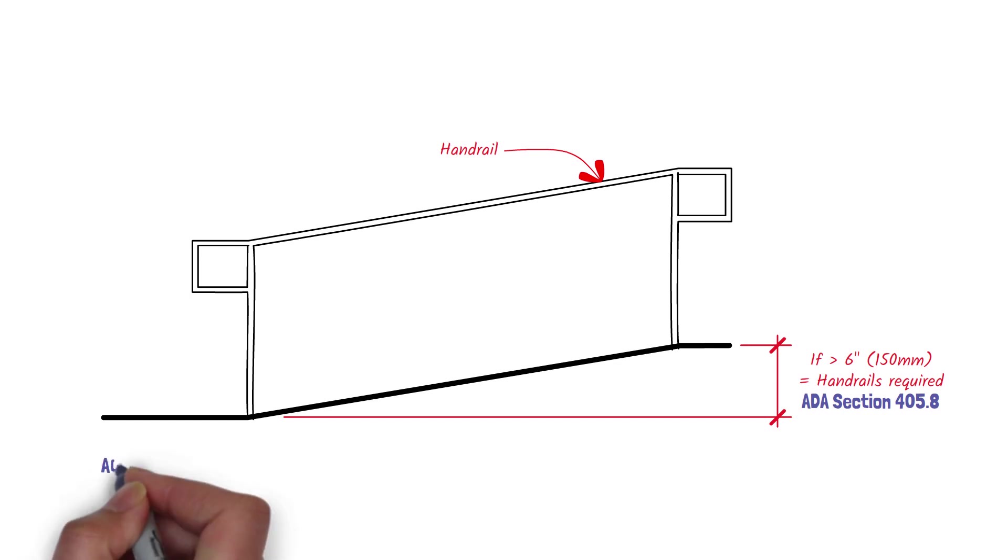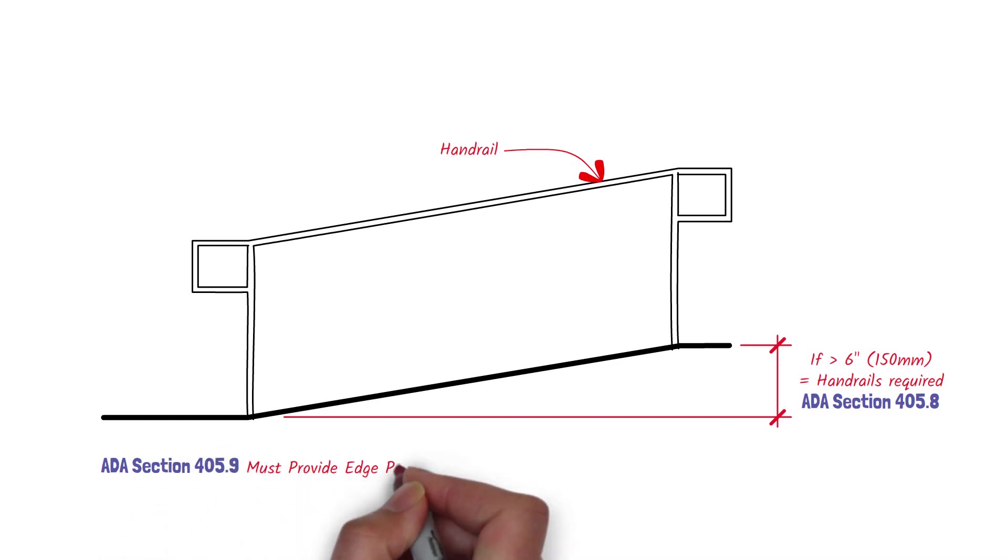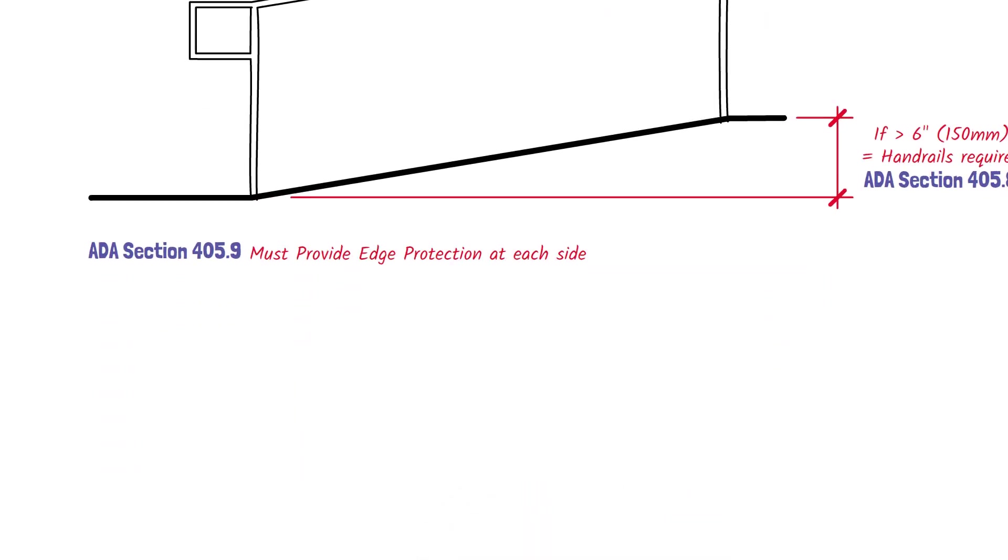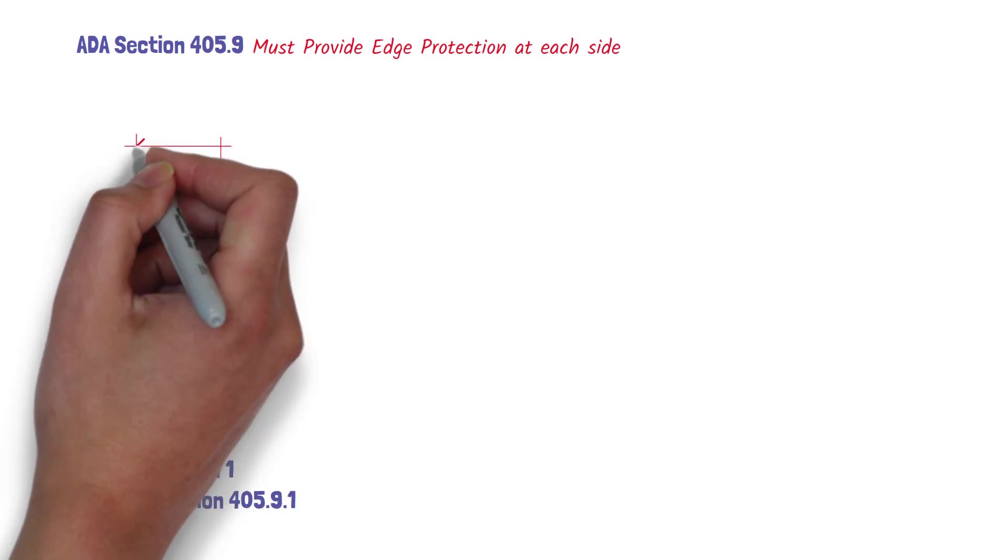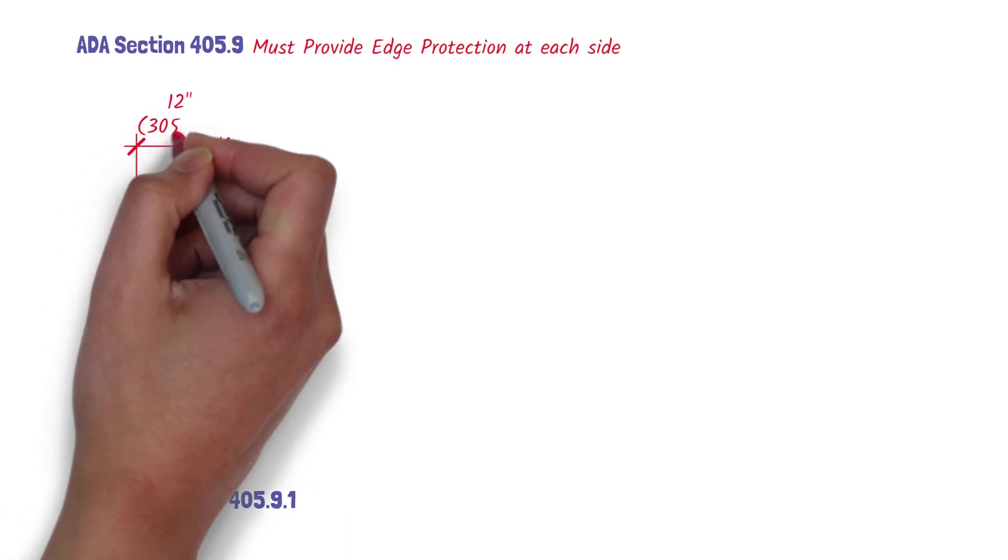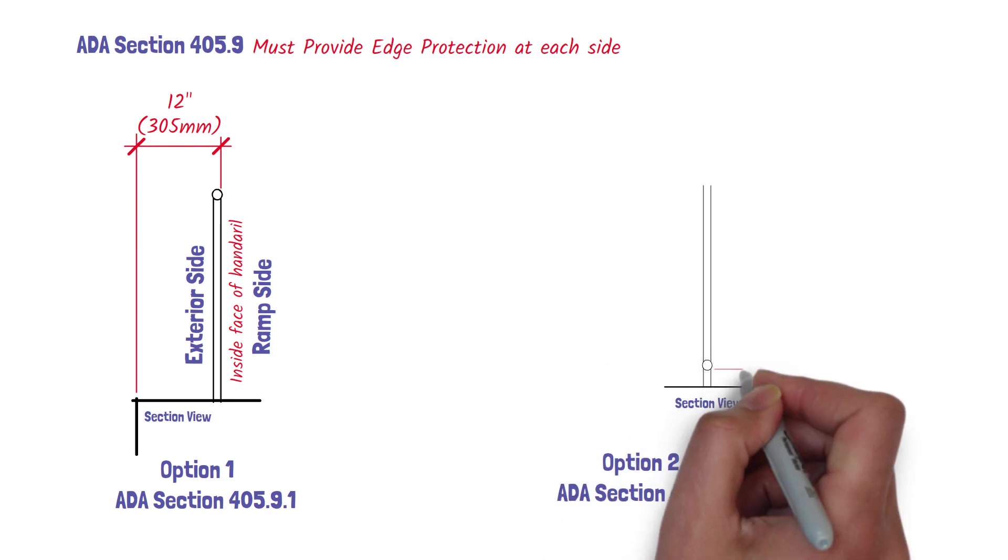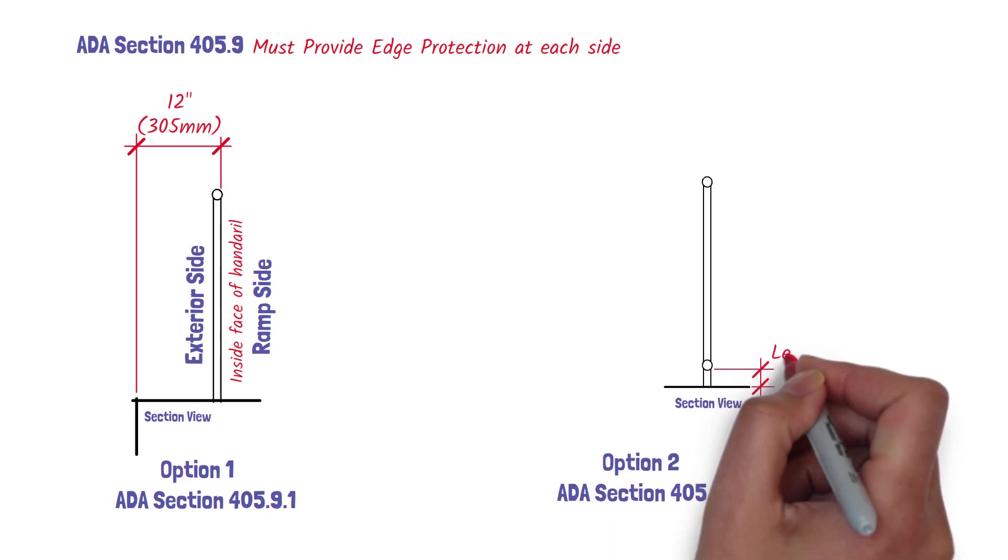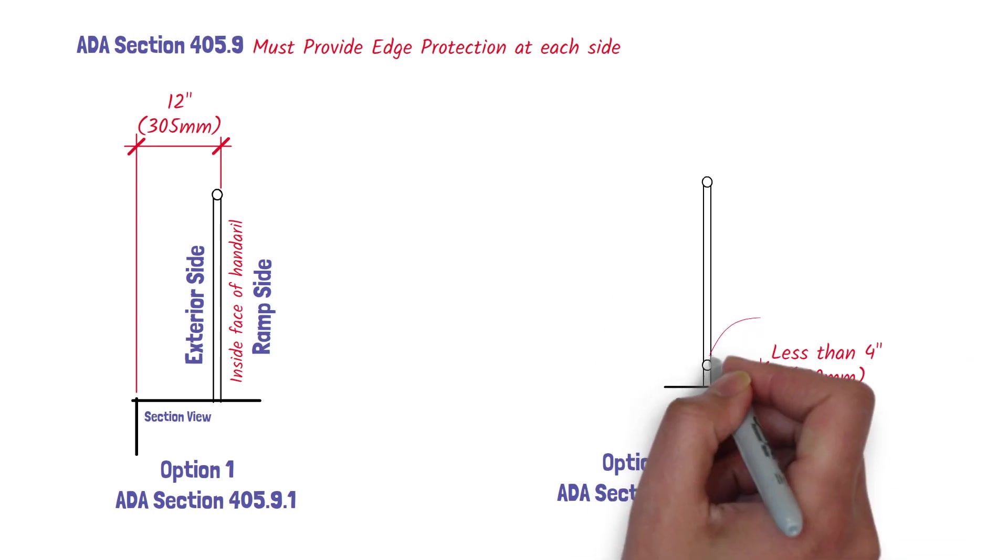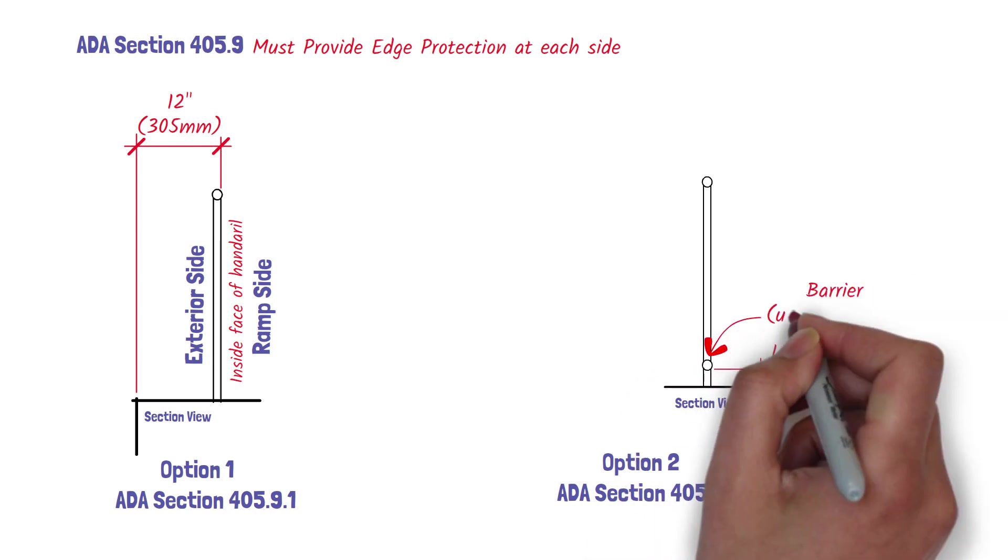Now what about edge protection? Per ADA Section 405.9, edge protection must be provided on each side of the ramp and at each side of ramp landings. There are two options on how to provide edge protection. Option 1, per ADA Section 405.9.1, the floor surface of the ramp or landing must extend 12 inches minimum beyond the inside face of the handrail. Option 2, per ADA Section 405.9.2, the edge protection can be a wall or barrier that does not allow a 4 inch diameter sphere to pass through within 4 inches of the floor.